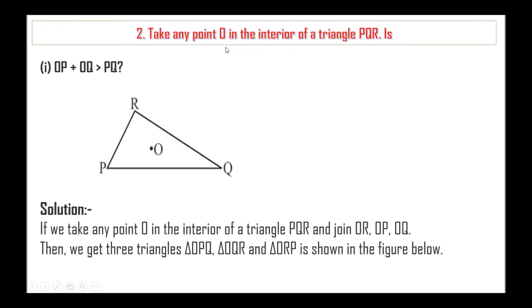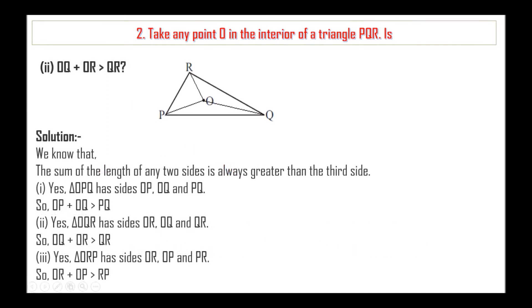Next question: Take any point O in the interior of a triangle PQR. Is OP plus OQ greater than PQ? We have taken triangle PQR with point O in the interior. If we take any point O in the interior of triangle PQR and join OR, OP, OQ, then we get three triangles: OPQ, OQR and ORP, as shown in the figure.